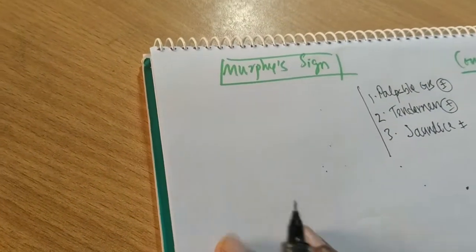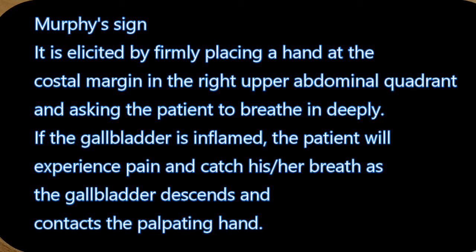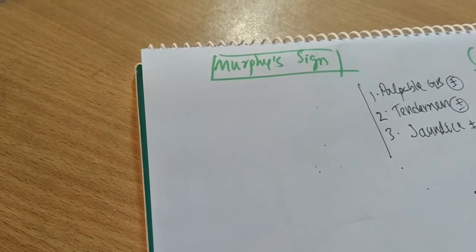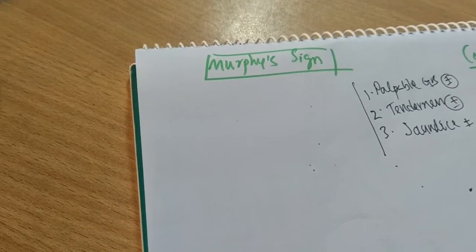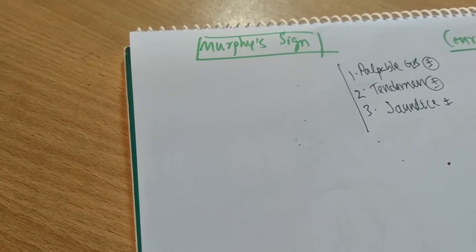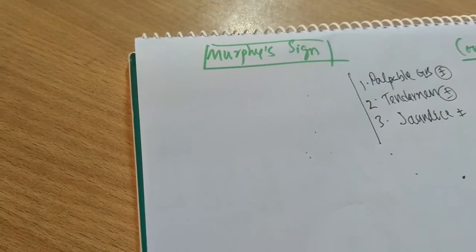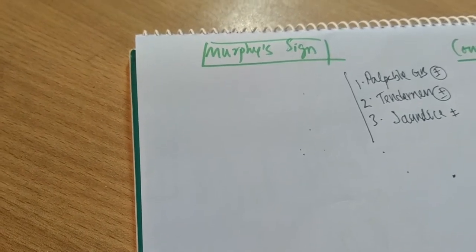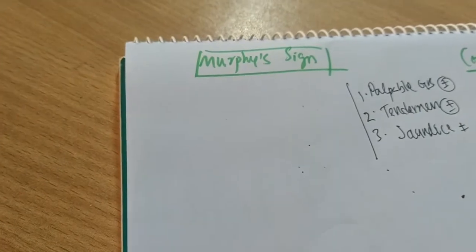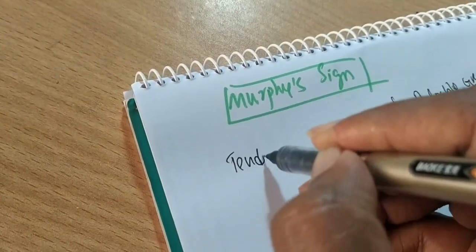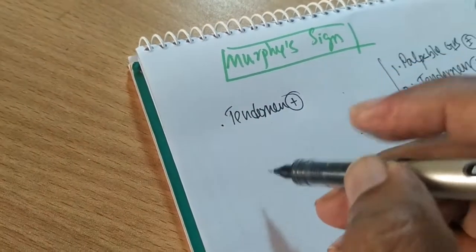In Murphy's Sign, we place our left thumb over the right hypochondriac region just below the right costal margin along the right mid-clavicular line, and the patient is asked to take a deep breath in. The patient feels sharp pain and holds the breath, because when we press our left thumb into the patient's abdomen and the patient takes a breath in, the inflamed gallbladder touches the parietal peritoneum and is pushed in by our finger, causing sharp pain.